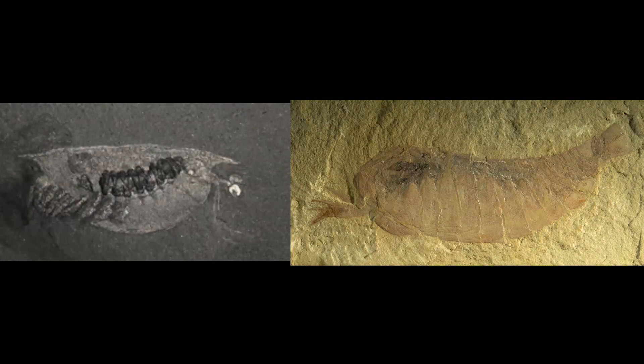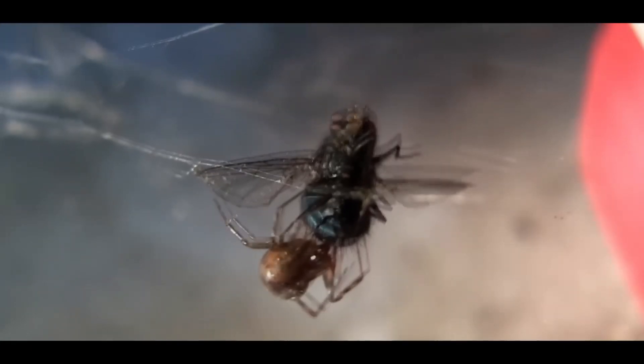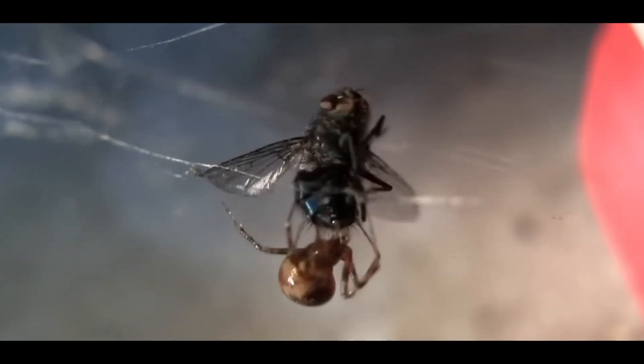Megacheirans and Isoxys were prehistoric versions of what was to come. With their innovative appendages and shields, they had the tools to conquer. These tiny Cambrian creatures left their legacy to the most successful animals on the planet, and they will continue to live on.